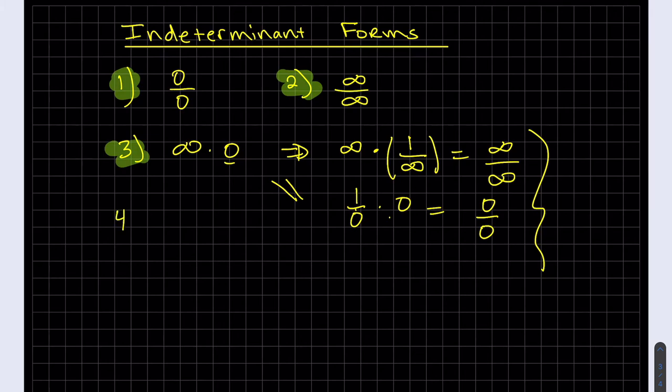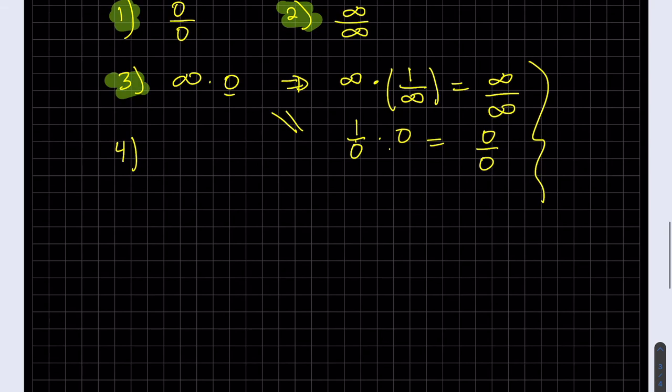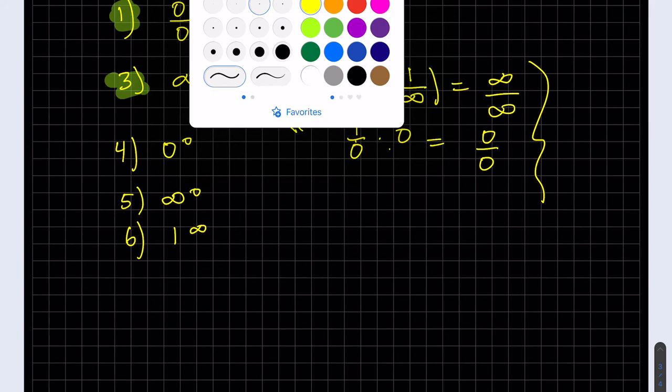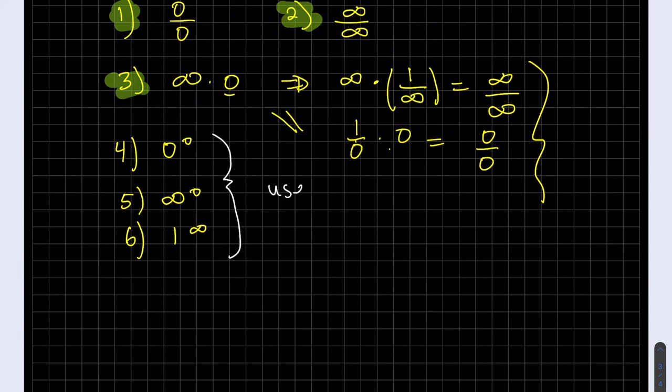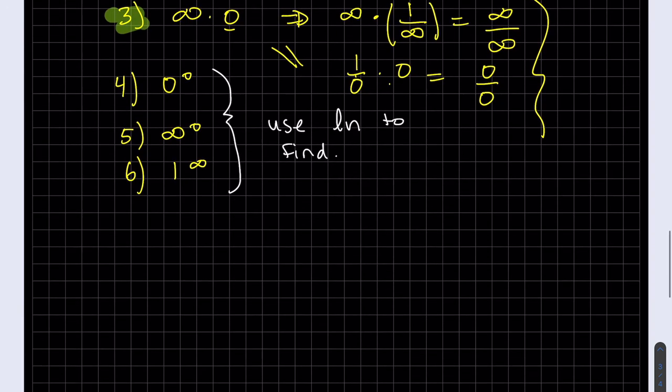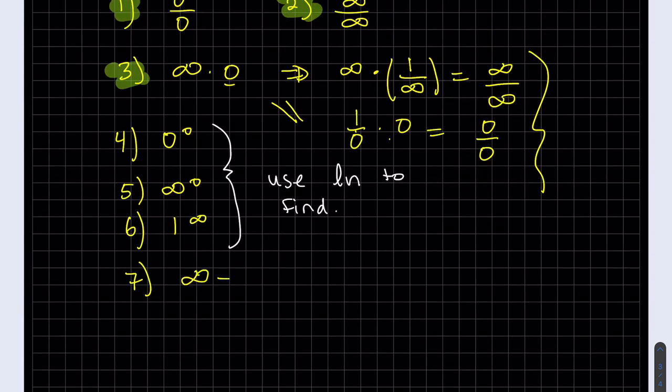So our 4th, 5th, and 6th indeterminate forms are the three we learned about in this video: 0 to the 0, infinity to the 0, and 1 to the infinity. And these we use natural log to find, like we did above. Number 7, our last indeterminate form, is infinity minus infinity. And here we combine like terms.